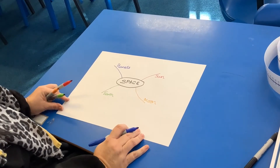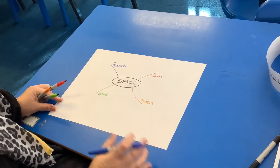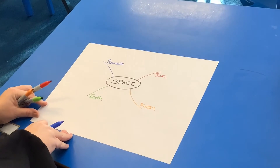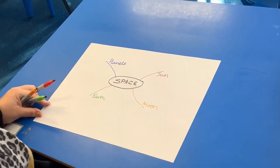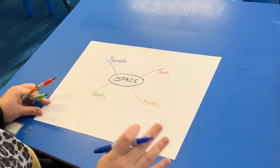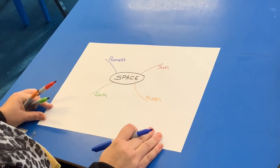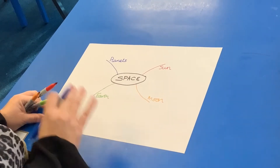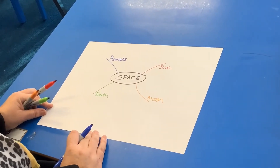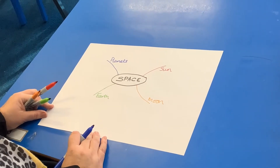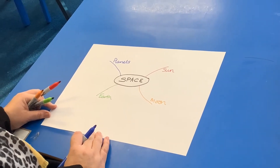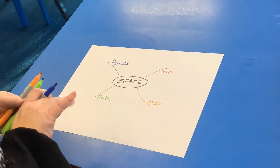This is a mind map of what you know — what's in your mind. At the end of the topic, just like we did for the World War 2 one, we'll go back to this mind map and see what we knew at the beginning and what we know at the end. Hopefully we'll add more. There might be things you're thinking, 'I don't really know a lot about space,' or you might know lots.